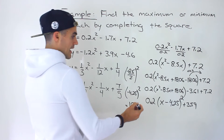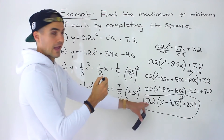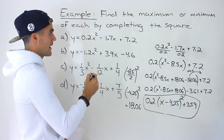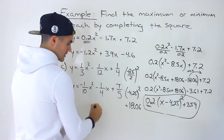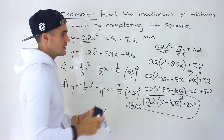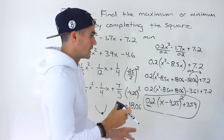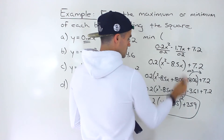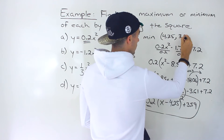We now have that quadratic in vertex form. The maximum or minimum: notice the 'a' value is positive, meaning the parabola opens up, so we have a minimum. The entire vertex — and sometimes they want just the y-value, but I'll give the full point — is positive 4.25 (the sign flips) and then 3.59. That's the answer for part a.